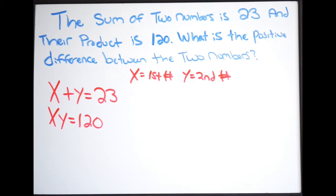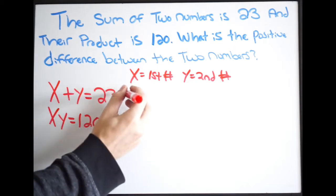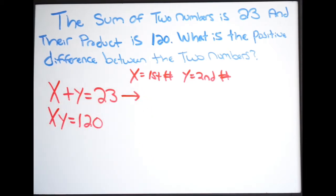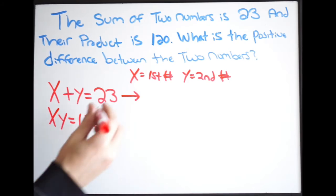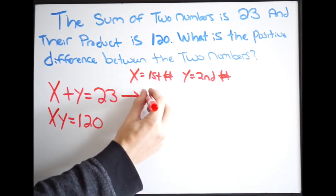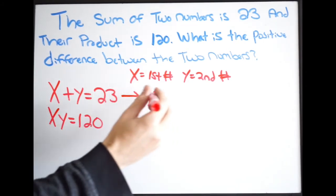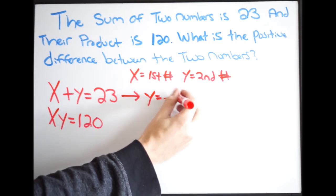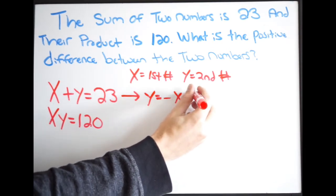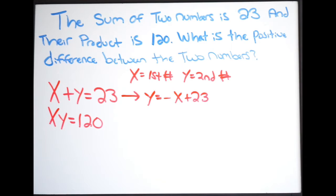From here we can go ahead and use substitution. So what I'm going to do is I'm going to take my first equation and I'm going to solve for y. If you want to solve for x you can do that too, but for me I'll just solve for y. And solving for y, I get y equals, I'm going to subtract x on both sides, so I get negative x plus 23. Okay, so there it is.